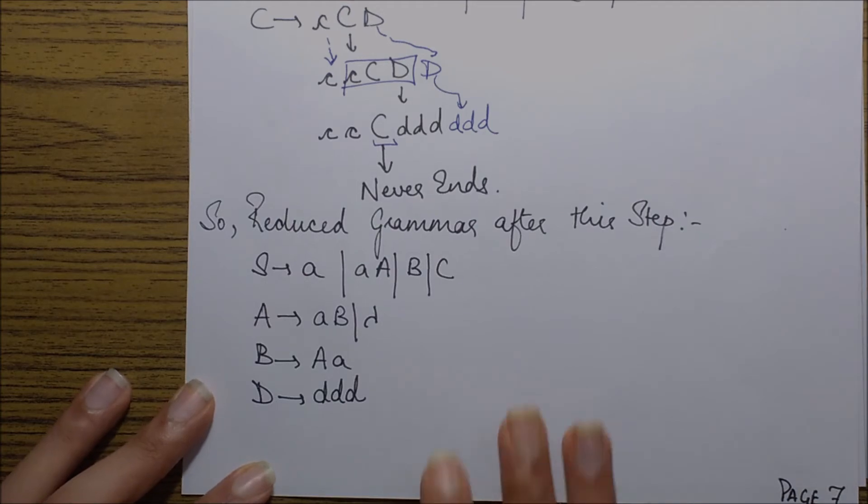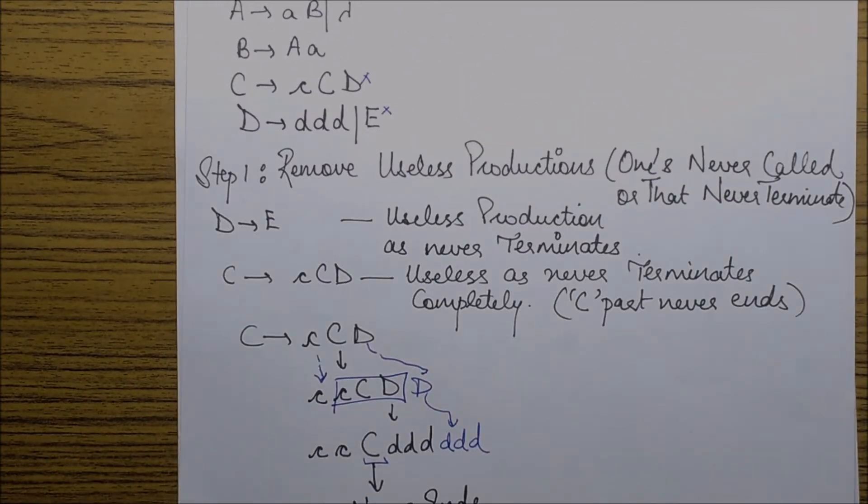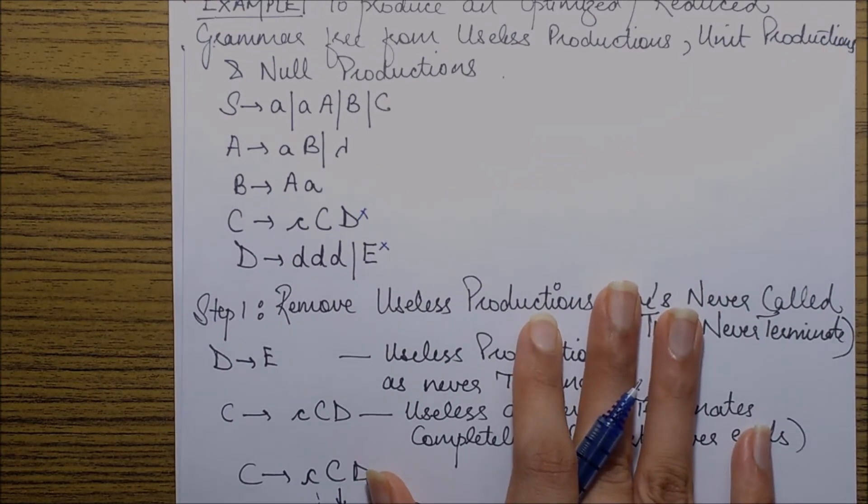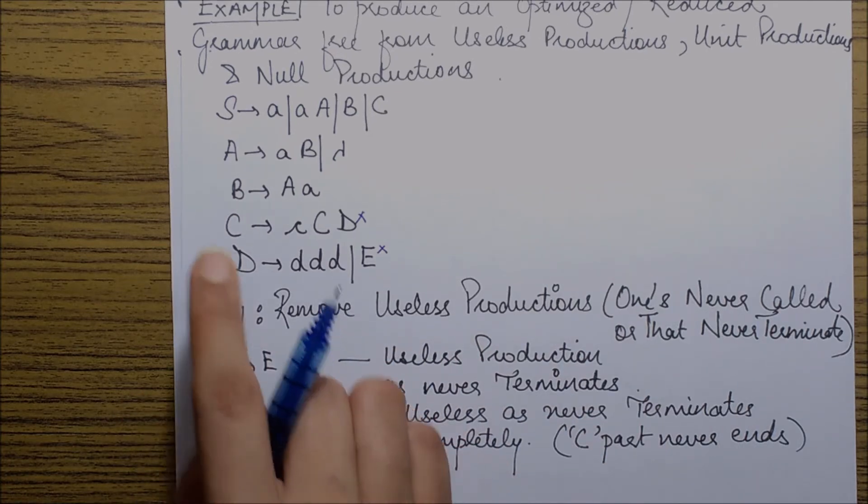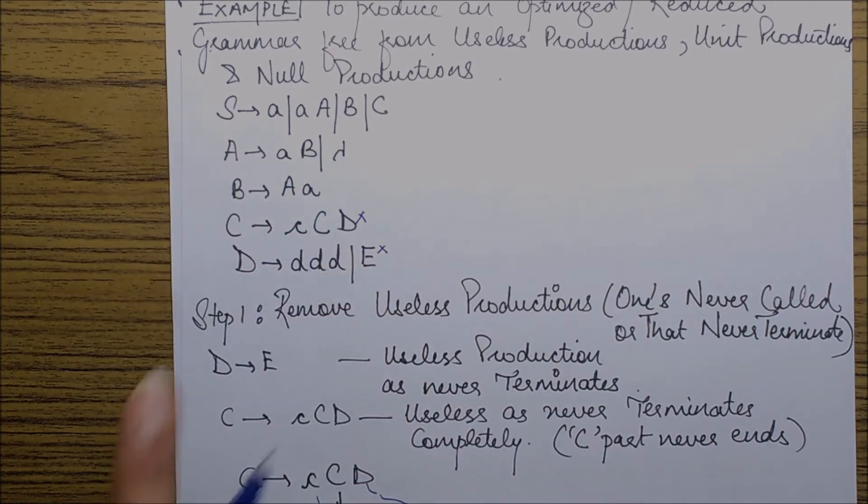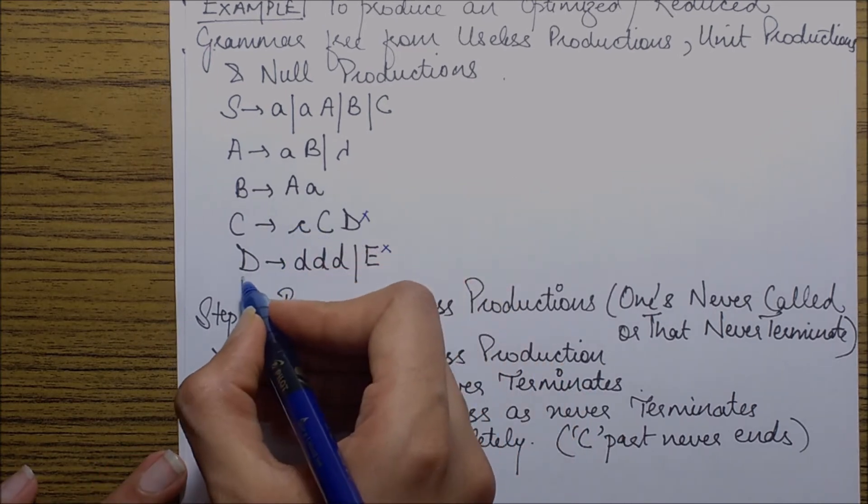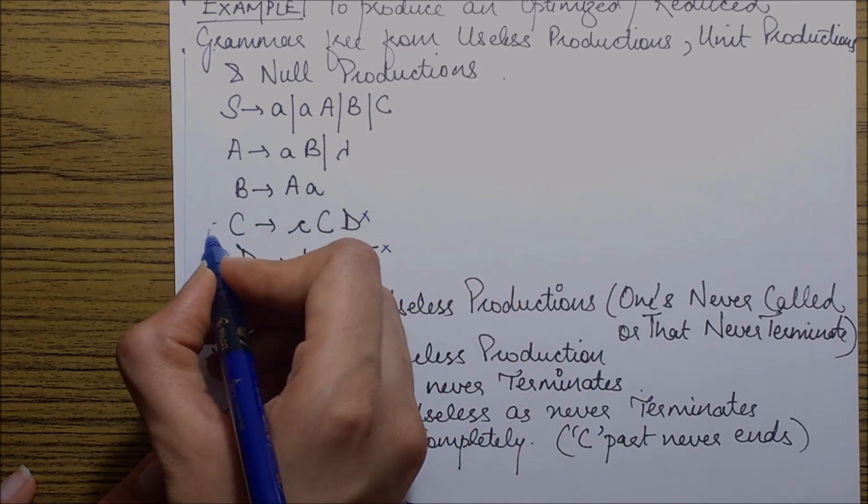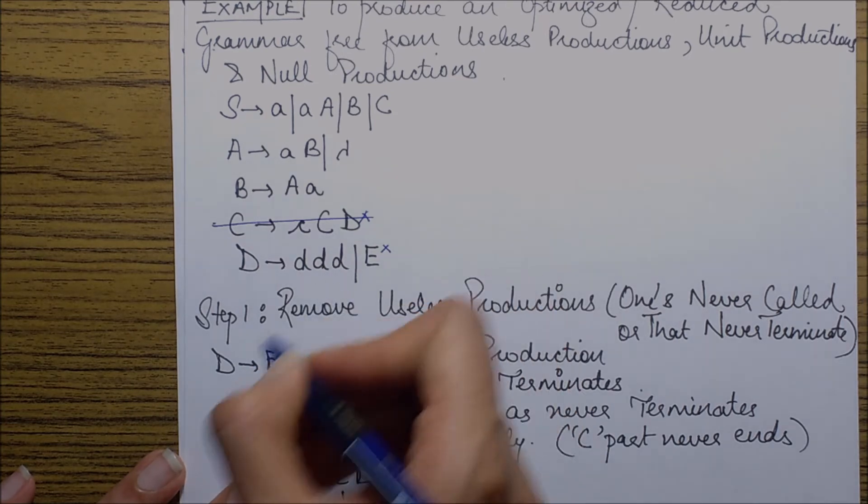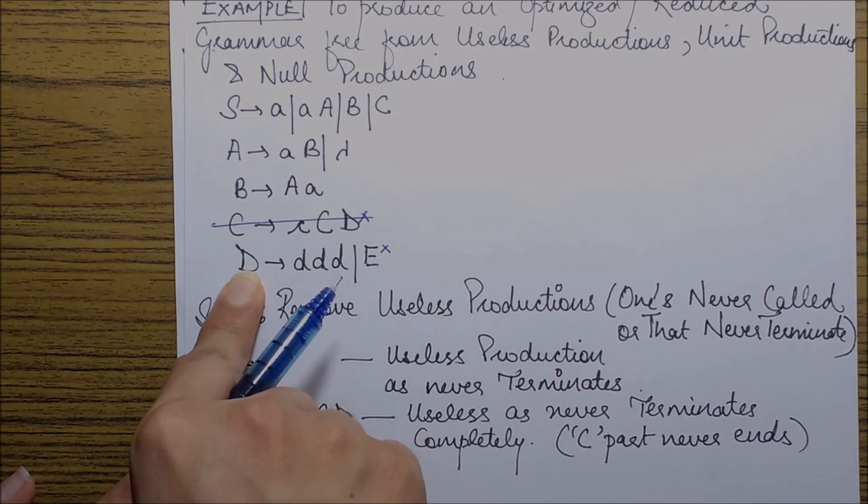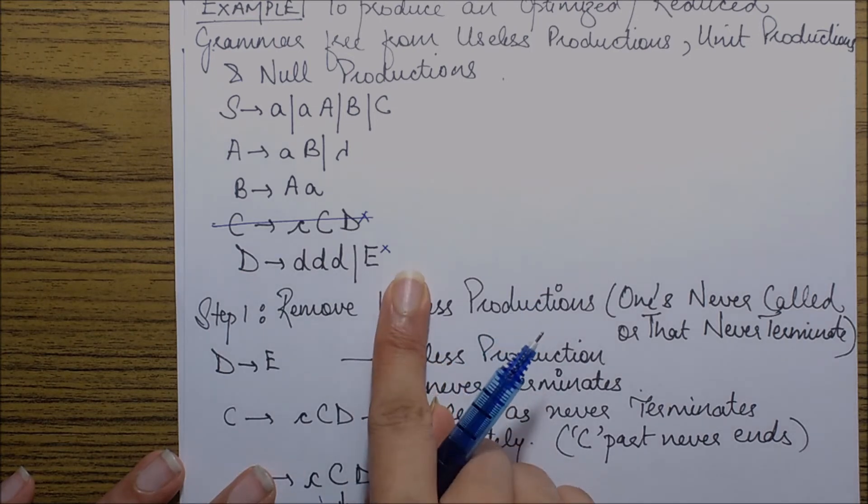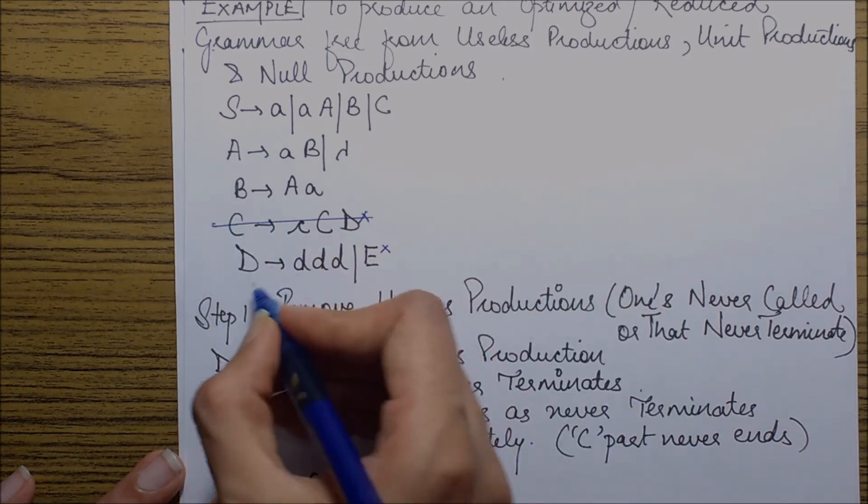Now also in this step, we also need to remove those productions which are never called upon. So if I have a look on my set of productions, if I see D is never called upon from the start symbol directly or indirectly because the only production which called D has already been removed. So D is never called upon, hence this turns out to be a useless production. So we can cross it.